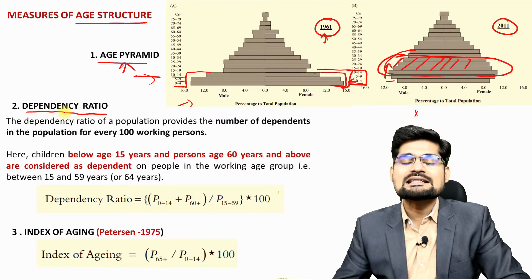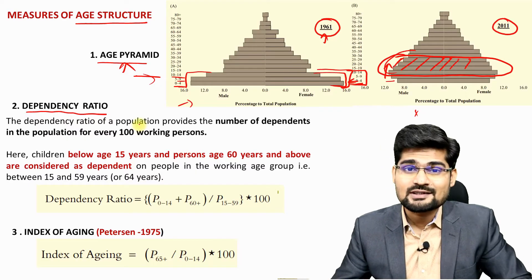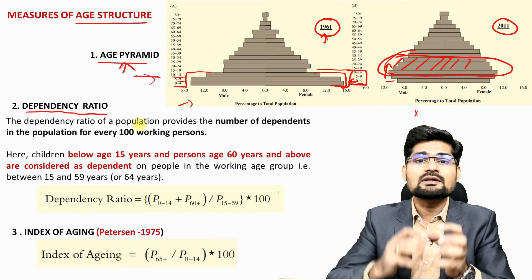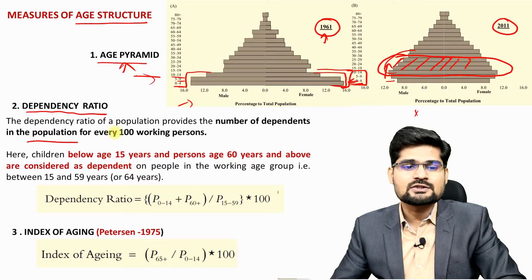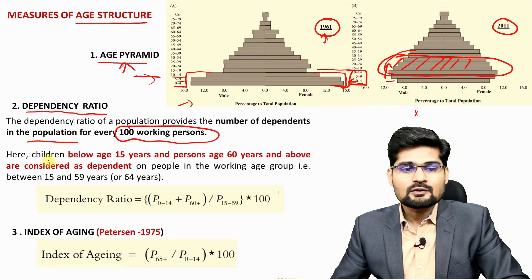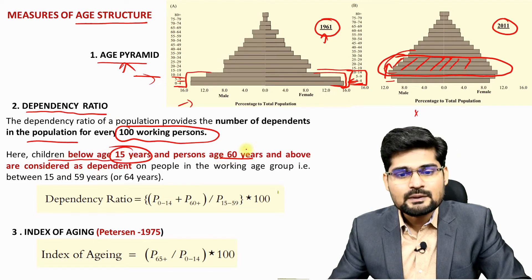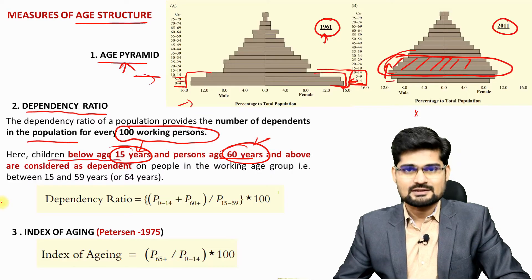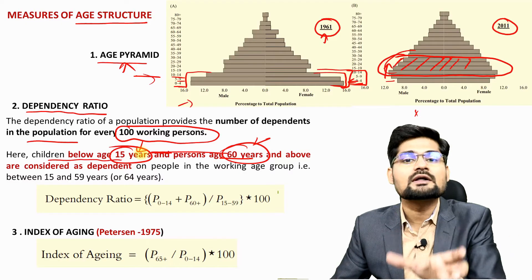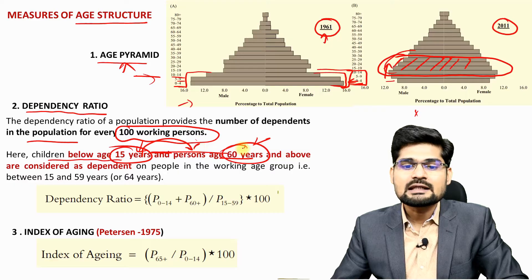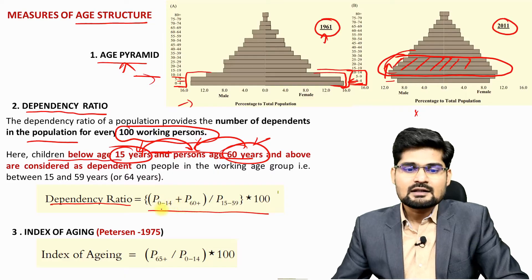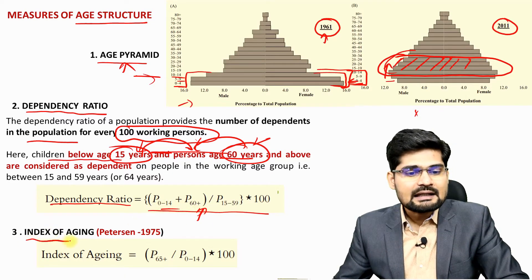Another measurement is the dependency ratio — the ratio of the dependent population to the working population. It represents the number of dependents for every 100 working persons. Children below age 15 and people above 60 are mostly the dependent ones, while those aged 15 to 60 are generally the working population. The dependency ratio is calculated using a specific formula.